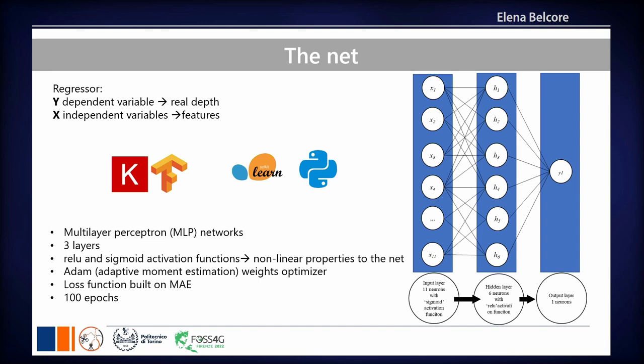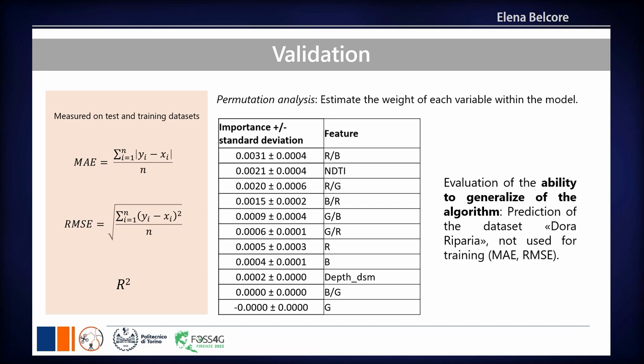We computed an importance value for all variables inserted in the network. Importance was calculated with a permutation analysis that considers the accuracy improvement or decrease for each variable by training the model multiple times, each time leaving out one variable. The most important features were the ratio between the red and blue bands, and the Normalized Difference Water Index (NDWI).